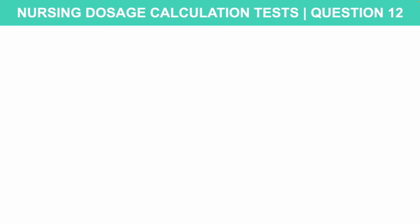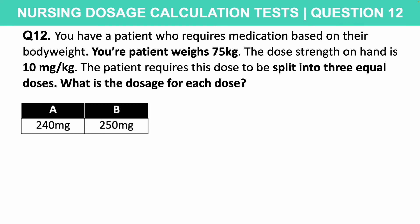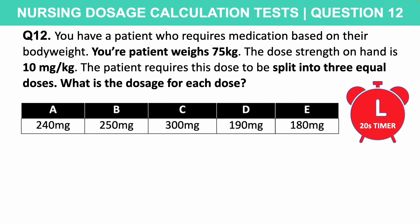Let's take a look at another question just like that one. You have a patient who requires medication based on their body weight. Your patient weighs 75 kilograms. The dose strength on hand is 10 mg per kilogram. The patient requires this dose to be split into three equal doses. What is the dosage for each dose? Is it A: 240 mg, B: 250 mg, C: 300 mg, D: 190 mg, or E: 180 mg? 20 seconds on the timer starts now.